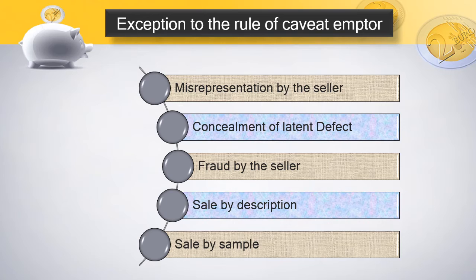Exception 2: Concealment of latent defect. If the seller is already aware of a defect and is hiding such defect from the buyer, the buyer can also claim for such defect. Exception 3: Fraud by the seller. If the seller fraudulently sold goods to the buyer, there is an exception given to the rule of Caveat Emptor, and hence it protects the buyer. The rule actually protects the seller from the buyer, but because of these exceptions, the rule gives protection to the buyers.